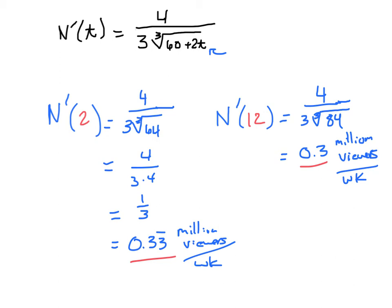Now the last part of the problem asks us to find the actual number of viewers. This is a rate of change, an increase of 330,000 viewers per week and about 300,000 viewers per week. To find the actual number of viewers, we have to plug values into the original function.